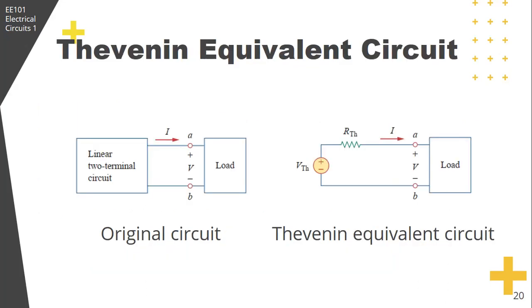According to Thevenin's theorem, this linear circuit can be replaced by this one, known as the Thevenin equivalent circuit. For example, in our household outlet, this circuit cannot be seen, but it can be replaced by this. This is the load that we will connect.